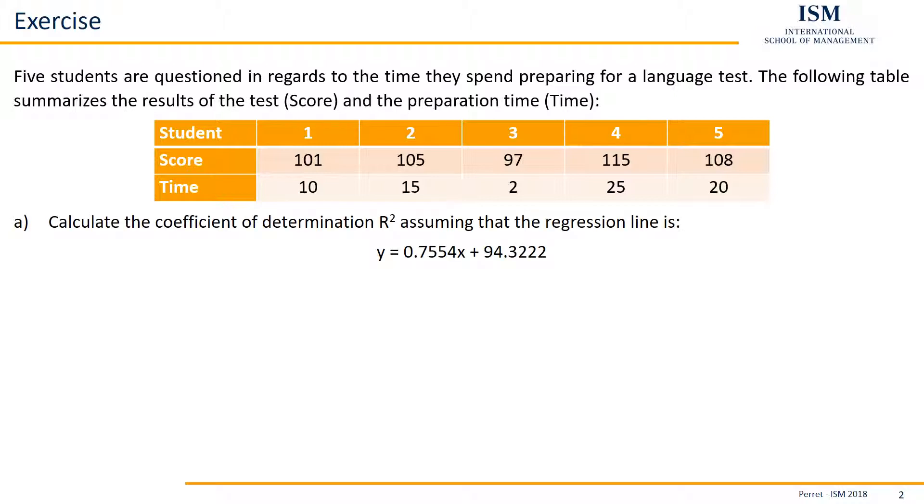Our first task, calculate the coefficient of determination R squared, assuming that the regression line has the following form. And part B, perform a suitable test with a margin of error of 1% to test whether the relation described by the regression line is significant as well.